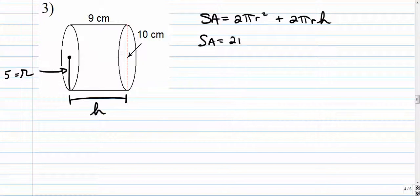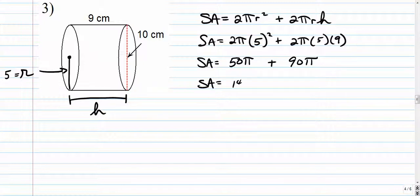So we just plug those values in. 2 times pi times 5 squared plus 2 times pi times 5 times 9. So, again, if you wanted to simplify all that, you can, or you can go right to your calculator. This is 25 times 2 is 50 pi, 45 times 2 is 90 pi. So this should be 140 pi, and that comes out to be 439.823 square centimeters. Moving right along.